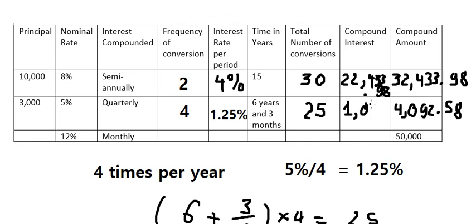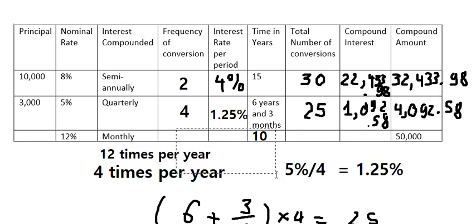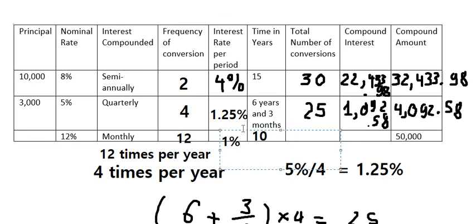Question three: 12% monthly means 12 times per year, so frequency of conversions is 12. The interest rate per period is 12% divided by 12, which equals 1%. The time is 10 years.